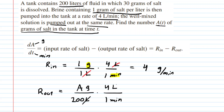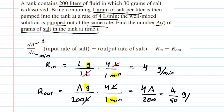Once again, the liters cancel, leaving four times A all over 200. We can reduce that by dividing numerator and denominator by four, giving A over 50. This too is measured in grams per minute, so dimensionally we are consistent and match the units of dA/dt.